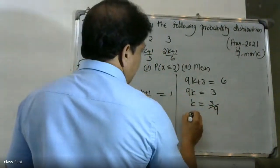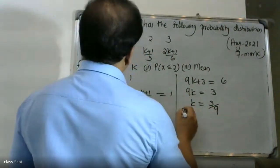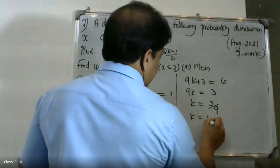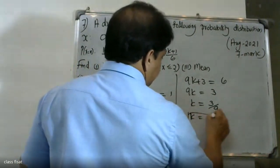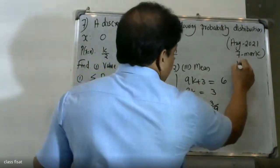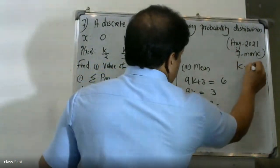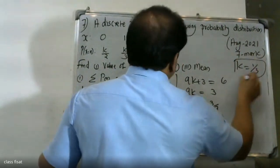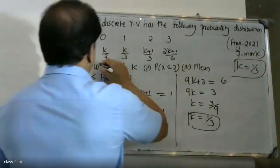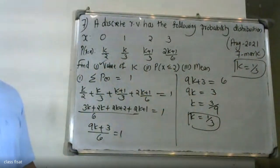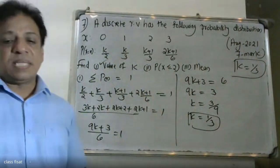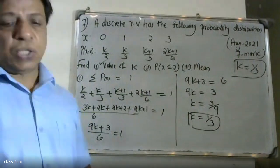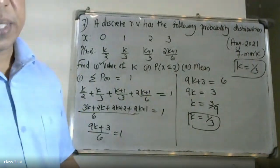K is equal to 3/9, so K is equal to 1/3. The value of K is equal to 1/3. That is the first question answer: K is equal to 1/3.